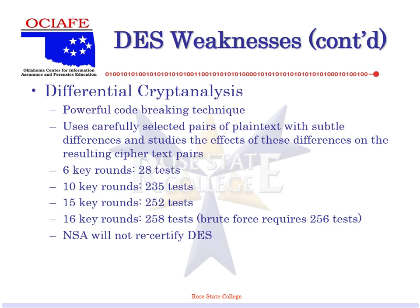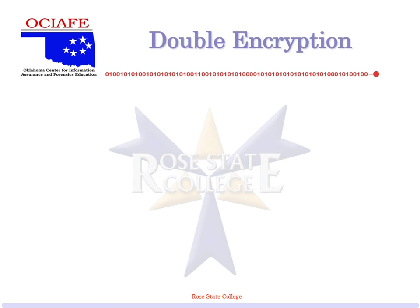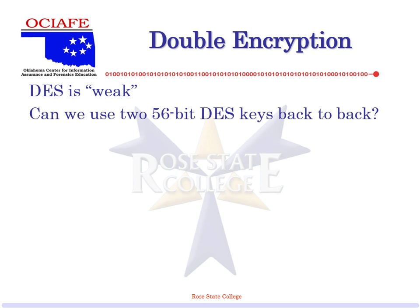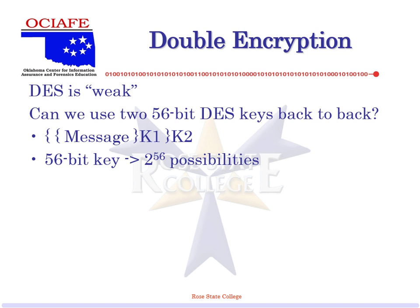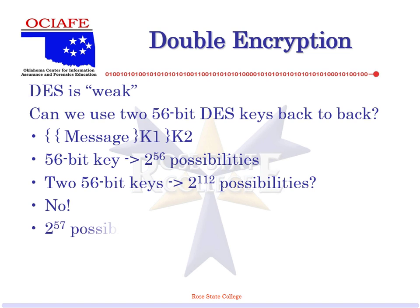Let's talk about double encryption. If DES is weak, what if we use two keys back-to-back? Is that twice as good? If we encrypt our message with key one, then encrypt again with key two, is it twice as good — 44 hours instead of 22? It's not. A 56-bit key is 2^56. Two 56-bit keys is not 2^112 — it's only 2^57, because we're really only doubling the value. So that's the end of part one.